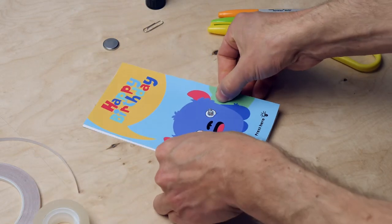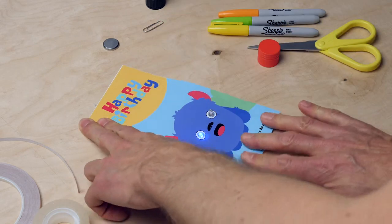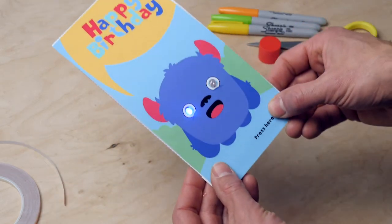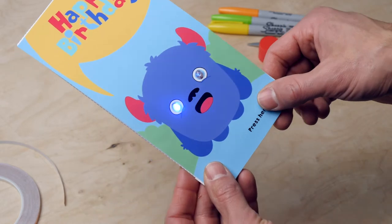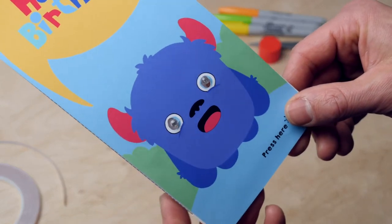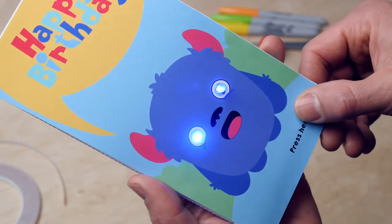The folded edge on the bottom is the switch of your circuit. If you push it on, the LED will light up. Let it go and the light turns off. This is how you close and open your electrical circuit. Now glue your greeting card together.